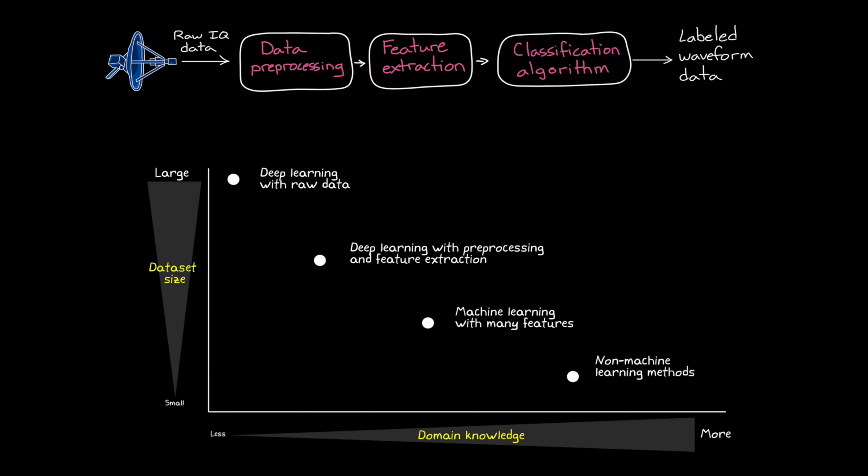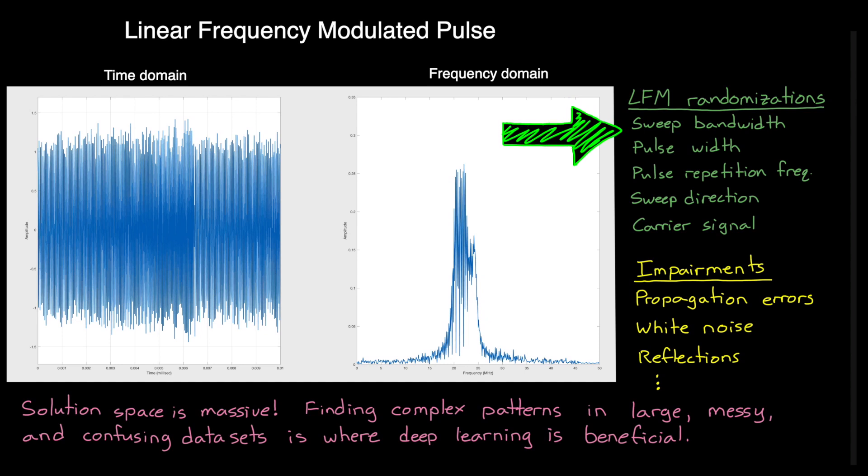Now, regardless of where your problem fits on this curve, the bottom line is that you need some amount of good labeled data that covers the entire solution space that the classification algorithm needs to handle, which in our case, the data needs to span all of the modulation schemes at many different carrier frequencies, noise conditions, bandwidths, and so on.